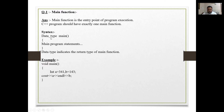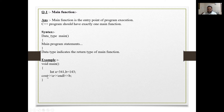An example: void main, then curly braces open, then the main program statements — integer a = 341, b = 143. Here a and b are integers. We use 'cout' and endl for printing and new lines in C++ or OOP C++, instead of printf as used in C.